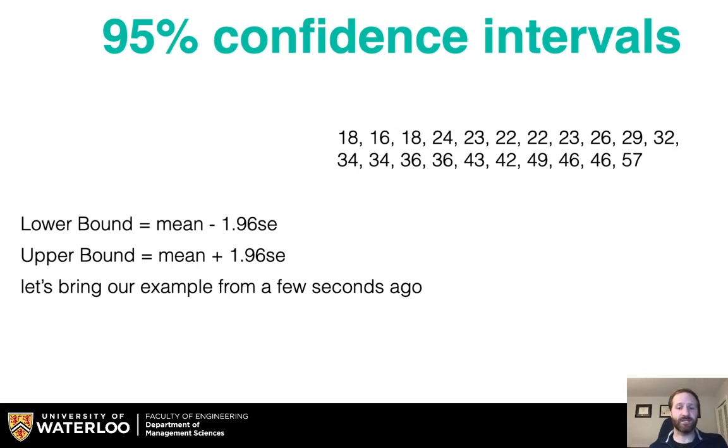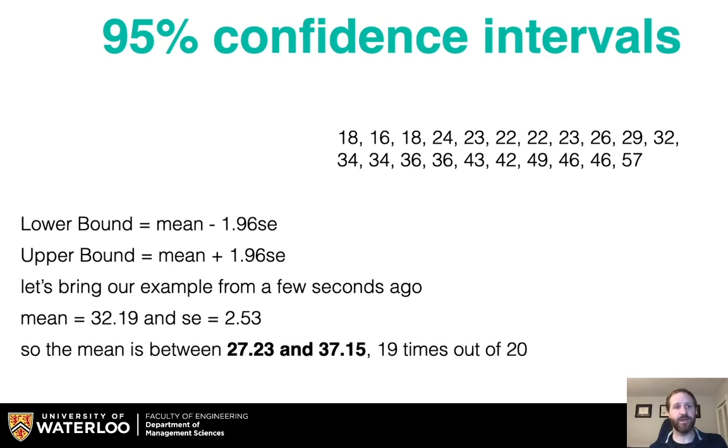So we bring in our example from a few seconds ago. We have the mean of 32.19 and the standard error of 2.53. So the mean is between 27.23 and 37.15, 19 times out of 20.